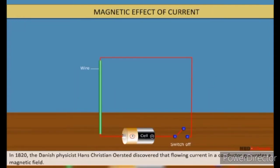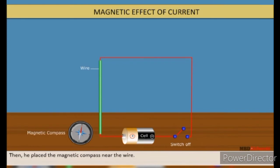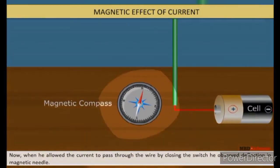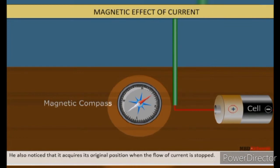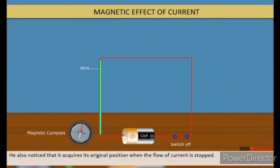In 1820, the Danish physicist Hans Christian Ørsted discovered that flowing current in a conductor generates a magnetic field. Ørsted demonstrated this by connecting the two ends of wire to a cell through a switch. Then, he placed magnetic compass near the wire. Now, when he allowed the current to pass through the wire by closing the switch, he observed deflection in magnetic needle. He also noticed that it requires its original position when the flow of current is stopped.